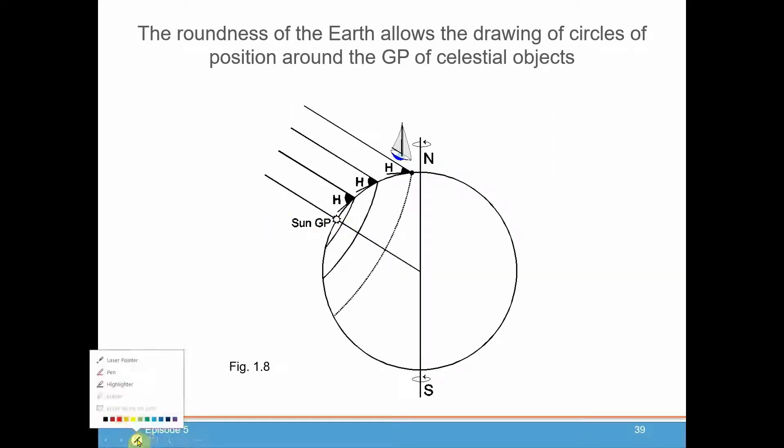Let me turn my pointer on here. So here we have the Earth. And the sun's GP is, let's say, here, directly overhead somewhere on the Earth. And then your boat is somewhere else. Depending on how far away you are from the GP, the angle you measure with your sextant will either be larger as you get closer to the sun's GP or whatever object you're sighting, or further away, the angle will get smaller. And that is the basic principle of how you know where you are on the Earth to get your circle of position.